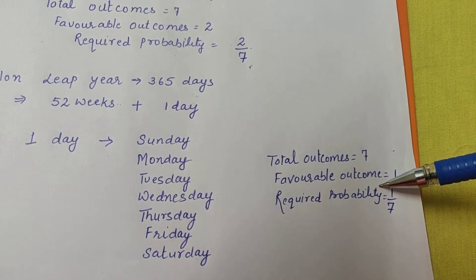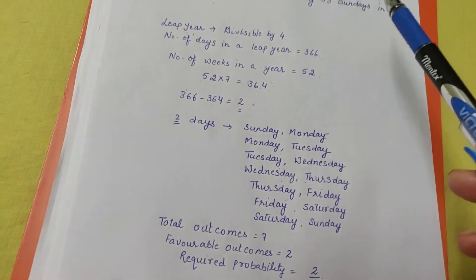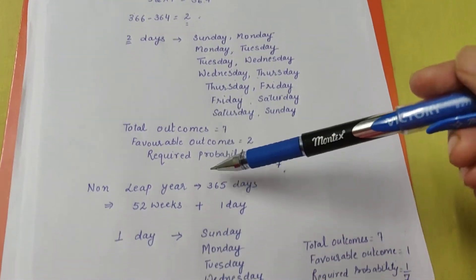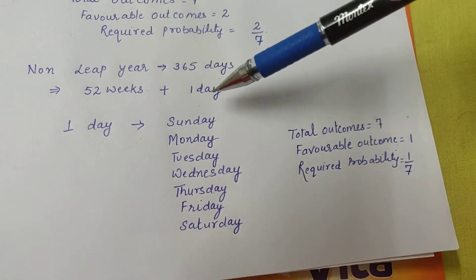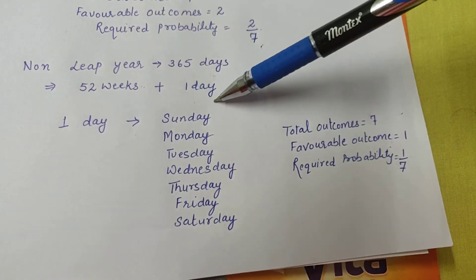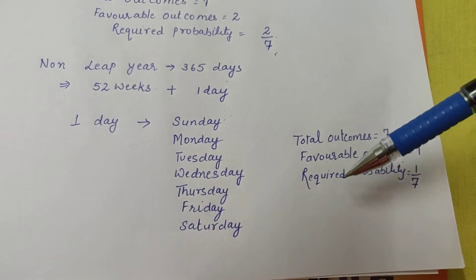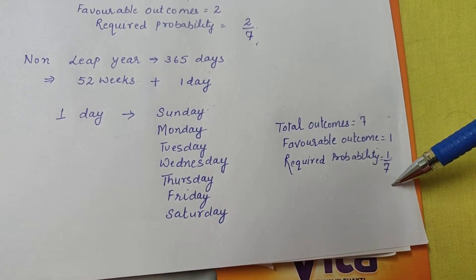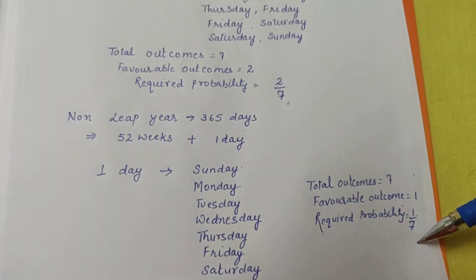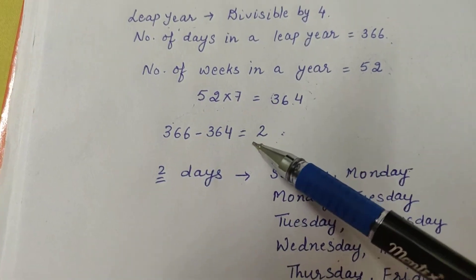Again, total outcomes are seven. Now how many favorable outcomes are there? There is only one — Sunday. So the probability of having 53 Sundays in a non-leap year is 1/7.